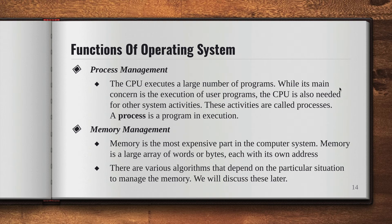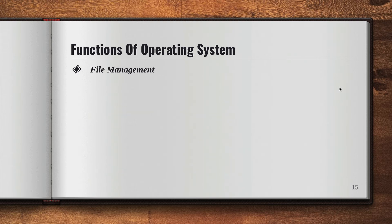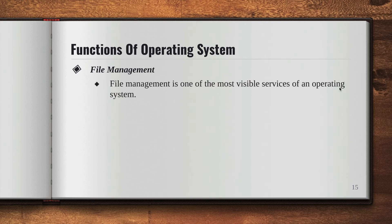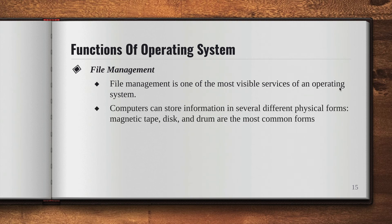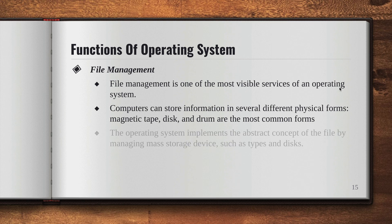Another function of the operating system is file management. File management is one of the most visible services of an operating system. Computers can store information in several different physical forms — magnetic tapes and discs and drums are the most common forms of storing information. The operating system implements the abstract concept of the file by managing mass storage devices such as tapes and discs.